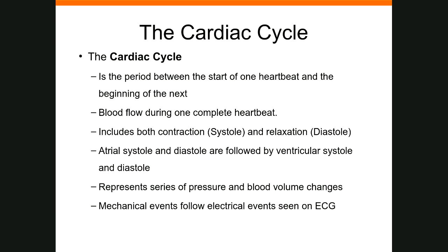The cardiac cycle is the period between the start of one heartbeat and the beginning of the next — the blood flow through one complete heartbeat. This includes contraction, which we call systole, and relaxation, which is diastole. Atrial systole and diastole are followed by ventricular systole and diastole. It represents a series of pressure and blood volume changes, mechanical events, and electrical events as seen on the ECG.